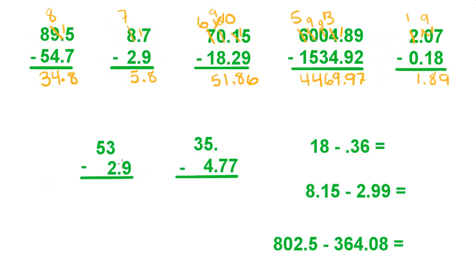Over here we can just add in a decimal point — just pretend it's there — and add in a 0 as a placeholder just so you don't get confused. So 0 minus 9 — can't do that, borrow from the 3, make it a 2, make that a 10. 10 minus 9 is 1. Bring down the decimal point. 2 minus 2 is 0. And bring down the 5.